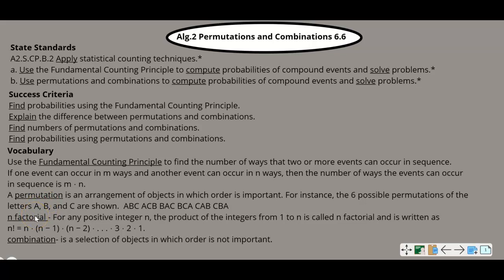N factorial: for any positive integer N, the product of the integers from 1 to N is called N factorial and is written as N with an exclamation point. That equals N times N minus 1 times N minus 2, continuing all the way down to 1. So if you have 5 objects, that's 5 times 4 times 3 times 2 times 1, which can be written as 5 factorial.